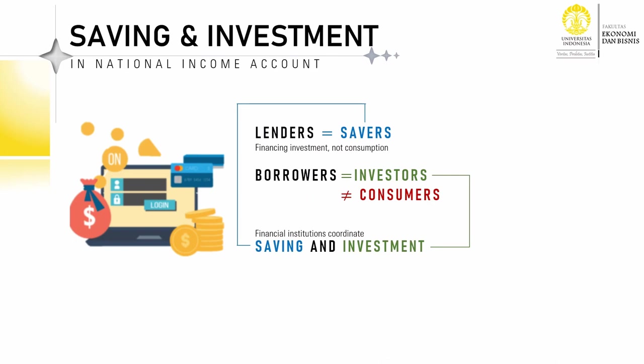Before we proceed, please recall what macroeconomics means by investment. Investment here is private investment — government investment is excluded — or the private sector's purchase of capital goods. As a consequence, when a government is running a budget deficit to build infrastructure, for instance, it won't add to the nation's investment, but rather adds to the nation's saving, as I will explain soon.